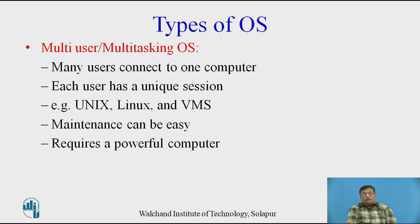Another type is the multi-user, multi-tasking operating system, where more than one user can perform multiple tasks at the same time. Many users connect to one computer and each user has a unique session. Examples are Unix, Linux, and VMS. Maintenance can be easy but it requires a powerful, highly configured computer.